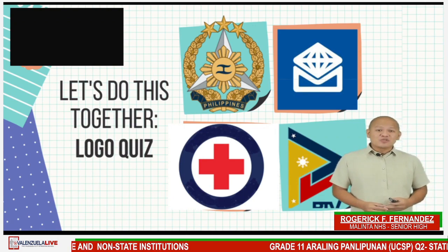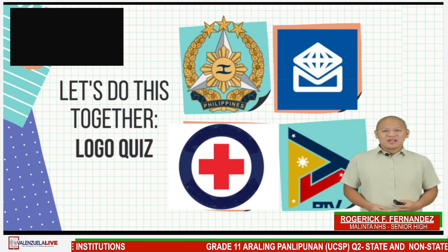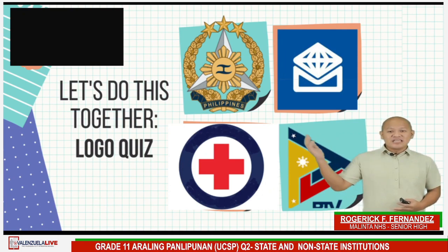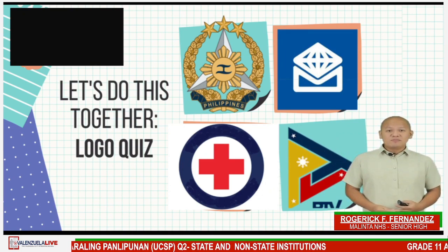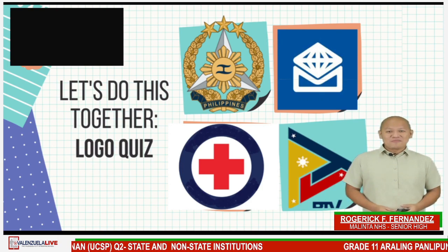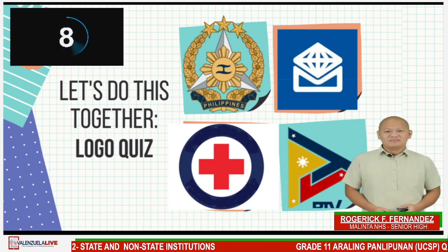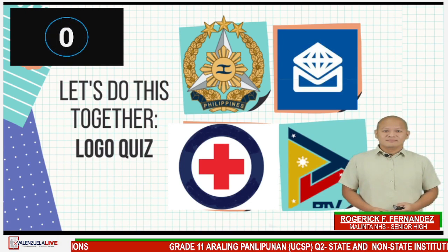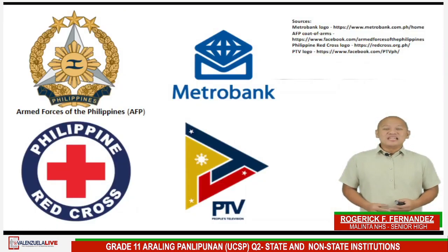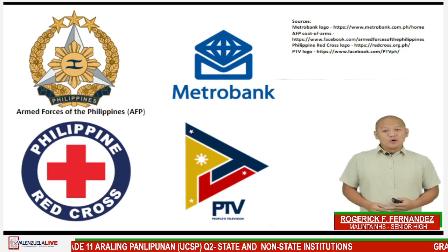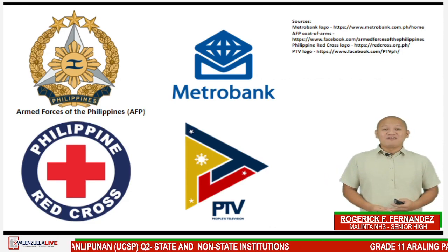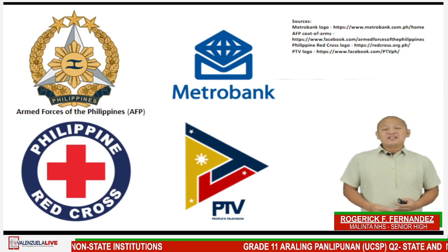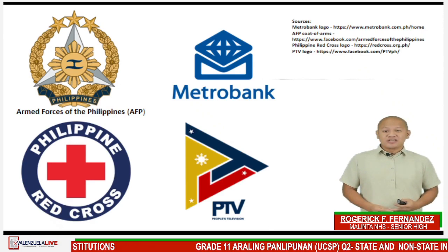Now, get ready as we do this logo quiz as one big theme. On the chat box, type in the name of the institution being represented by each logo, coat of arms, or symbol. You will be given 10 seconds to answer. I believe that you got everything correct. Our logos, coat of arms, and symbols represent the following institutions: the Armed Forces of the Philippines or AFP, Metro Bank, the Philippine Red Cross, and the People's Television Network, Channel 4.